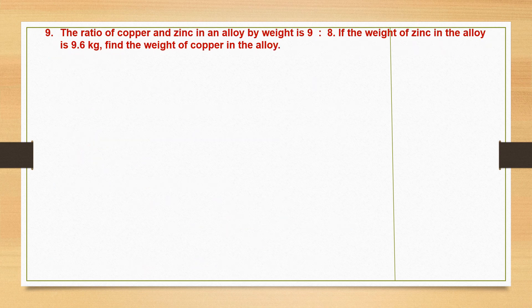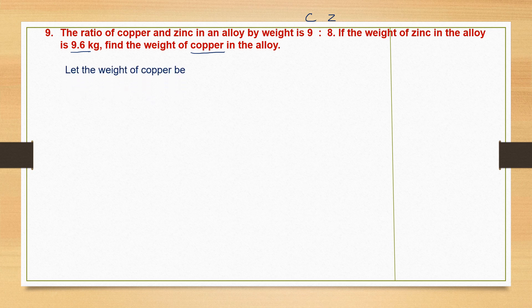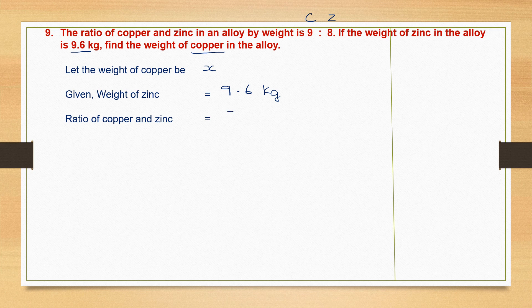Next question. The ratio of copper and zinc in an alloy by weight is 9 is to 8. The order is important: copper and zinc. If the weight of zinc in the alloy is 9.6 kg, we must find the weight of copper. So let the weight of copper be x kg. The given weight of zinc is 9.6 kg. The ratio of copper and zinc is 9 is to 8.